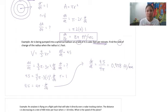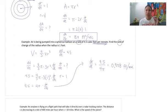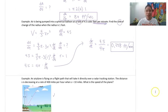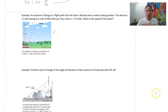Originally they were asking for the rate of change of the radius when the radius is one foot. So at that particular instance, the radius is increasing by 0.358 feet per minute. Let's move on to the next example, which gets slightly more involved. An airplane is flying on a flight path that will take it directly over a radar tracking station.